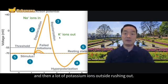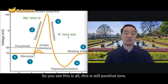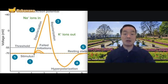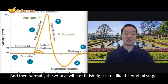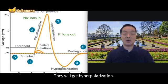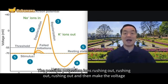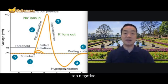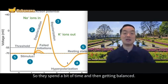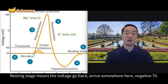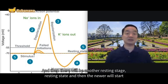In repolarization, a lot of potassium ions rush out. When positive ions rush out, the voltage is no longer very positive and goes downward. Normally the voltage will not stop right at the original resting stage — it will go too far. Too much potassium rushes out, making the voltage too negative. After spending a bit of time, it gets balanced and goes back to the resting stage — back to negative 70 millivolts — and then waits for another trigger to happen.